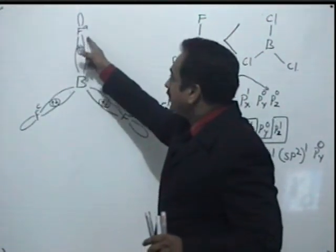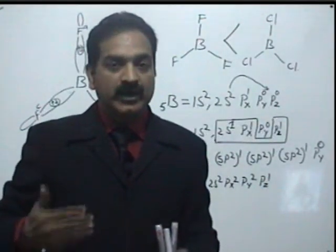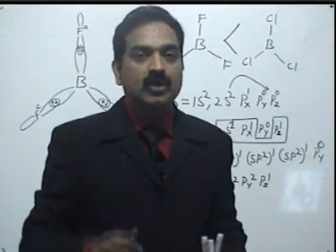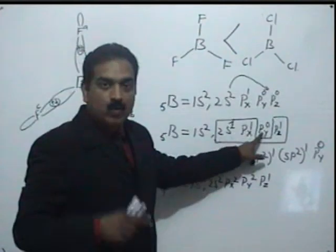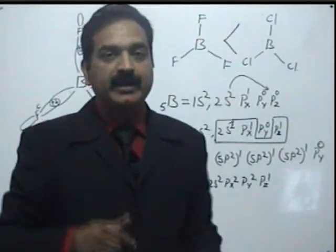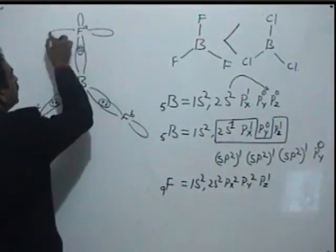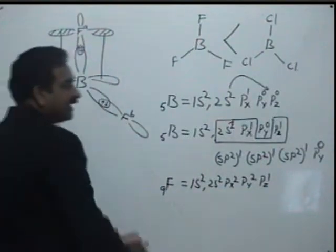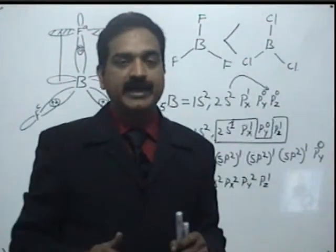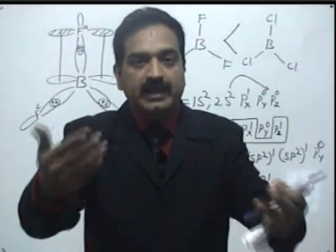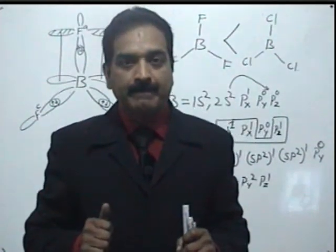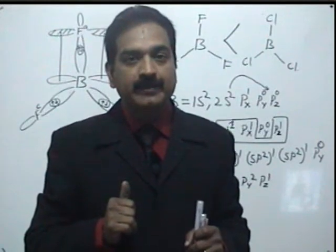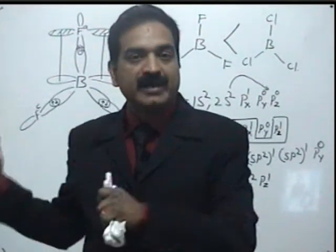Since fluorine is not comfortable with such high electron density, it wants to decrease its electron density. Boron has one vacant orbital available. So fluorine overlaps with this vacant orbital of boron, offloading its extra electron density towards boron. This reduces fluorine's electron density and partially compensates for boron's electron deficiency.